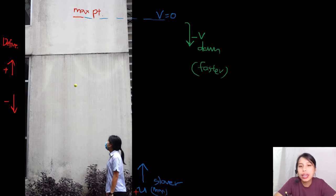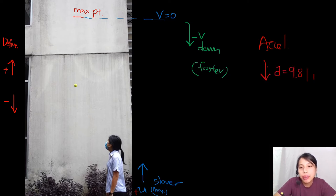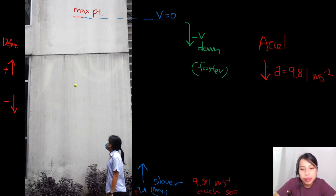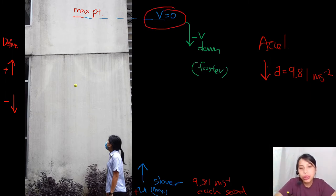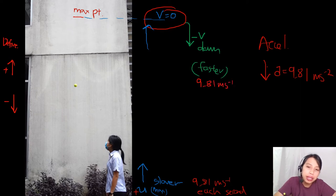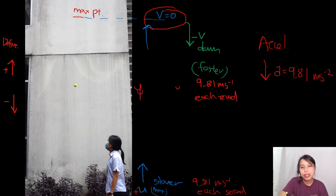Why is it slowing down going up? Because of acceleration. No matter where you are in the whole journey — flying up or flying down — your acceleration is still downward at 9.81 m/s². Every second you are about 9.8 m/s slower going up until you reach zero, then you U-turn and come down, getting faster by 9.81 m/s each second.